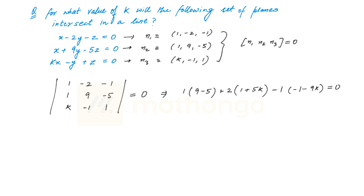This should equal 0. Solving, we get 19k + 7 = 0, so k = −7/19. This is the value of k for which all three planes will pass through the same line of intersection. I hope the concept is clear now.